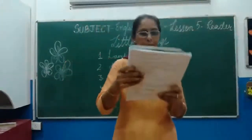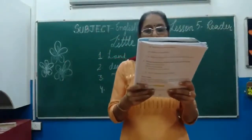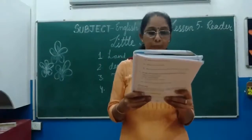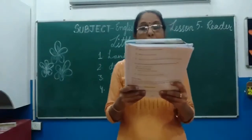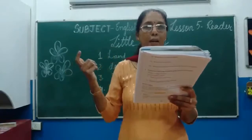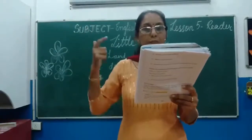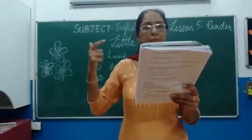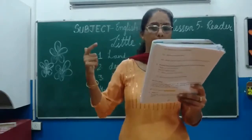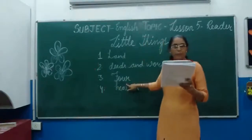Now let's start. How many times does the word 'little' occur in the poem? You will count — 1, 2, 3, and 4. The answer is 4 times.